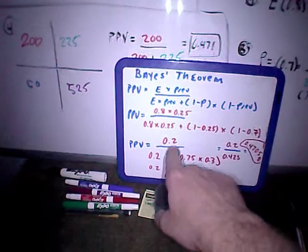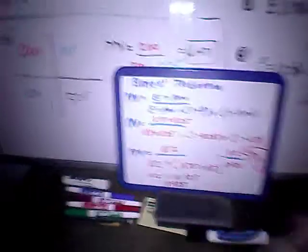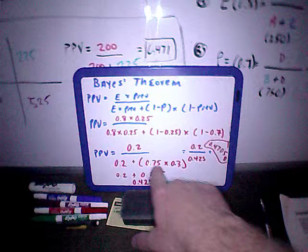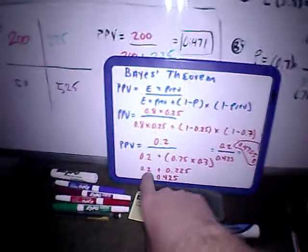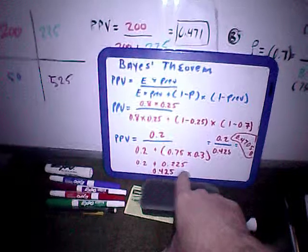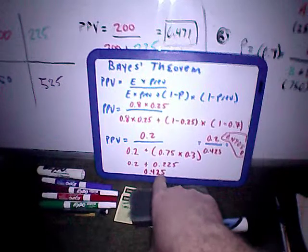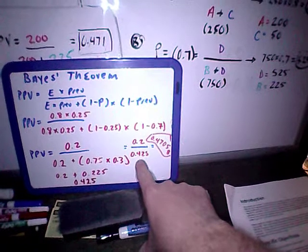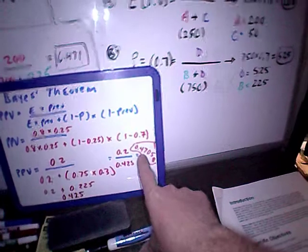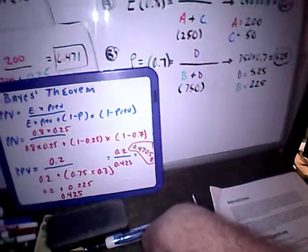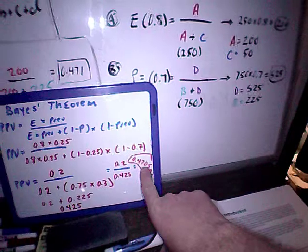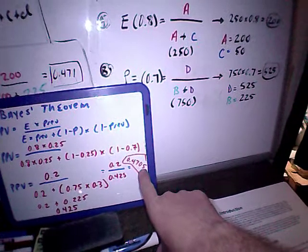So we've done that here. 0.8 times 0.25 is 0.2 divided by 0.2 plus, and then I've done this here, 0.75 multiplied by 0.3, which is 0.2 plus 0.225, or 0.425. So our equation is now 0.2 divided by 0.425, which gives me 0.47058, et cetera. If you look here, I rounded. This is 0.47 or 47.1%.